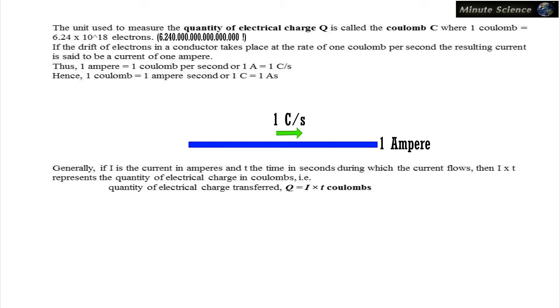Generally, if I is the current in amperes and T the time in seconds during which the current flows, then I times T represents the quantity of electrical charge in Coulombs. That is, quantity of electrical charge transferred, Q equals I times T Coulombs.